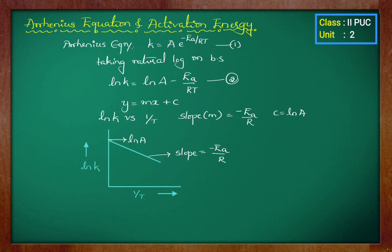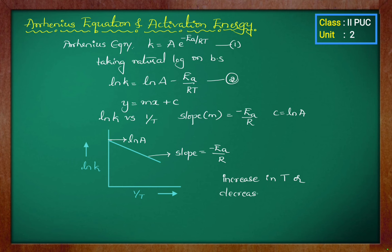So, from the slope we can calculate the energy of activation, and from the intercept we can calculate the value of A. From this Arrhenius equation, we can tell that an increase in temperature or a decrease in activation energy will result in an increase in the rate of the reaction.